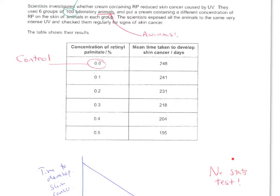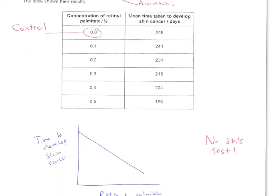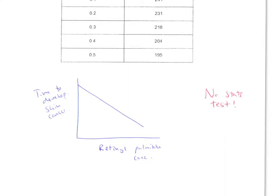And the other thing is as well there's no statistical test. If you've got a correlation you need to see if it's a significant correlation or not. And to do that you do a correlation coefficient which is a type of statistical test. So you'd need to determine to what level of probability the correlation was due to chance.